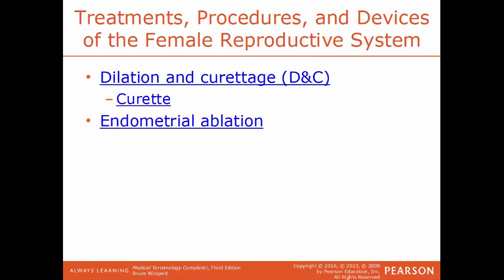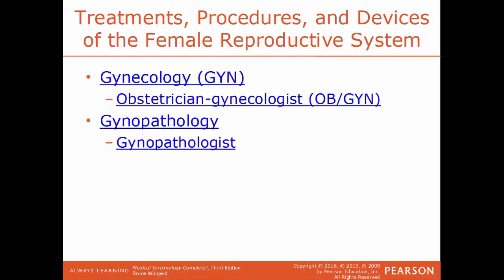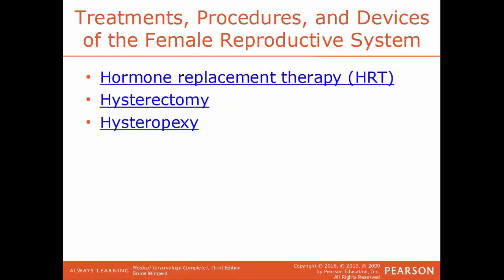Endometrial ablation is a surgical procedure that destroys the inner lining of the uterus to reduce menstrual flow and treat abnormal uterine bleeding. Gynecology is the field of medicine dealing with the female reproductive tract — a specialist is an OBGYN, an obstetrician and gynecologist. Gyneopathology is the field dealing with diseases of the female reproductive tract — a specialist is a gyneopathologist.